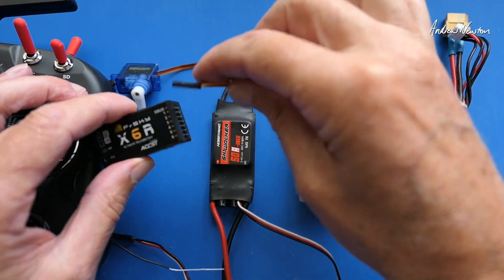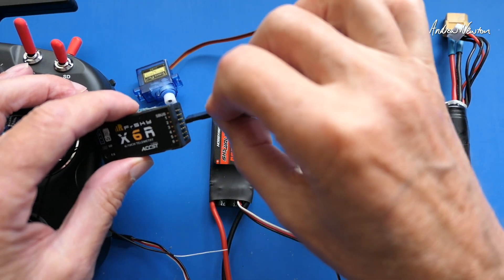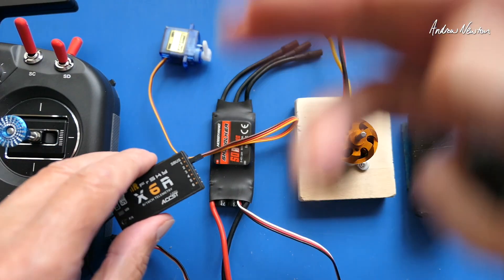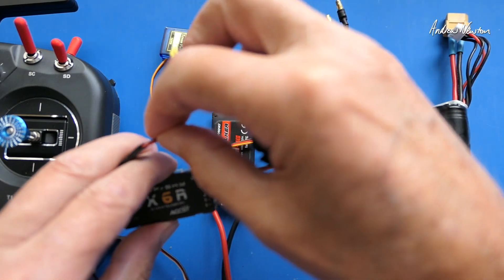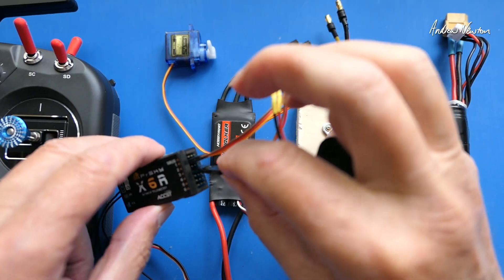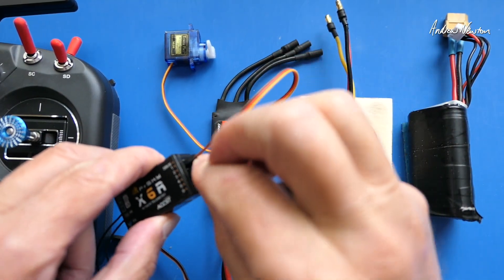So we have the receiver, we have servos that plug into the receiver and the receiver and the servos need five volts to get operating so we'll plug in a five volt battery there.